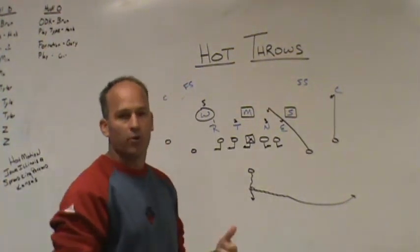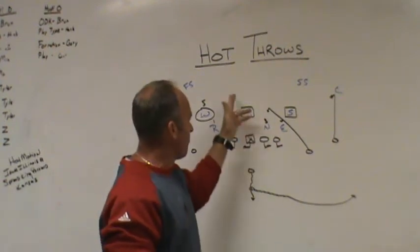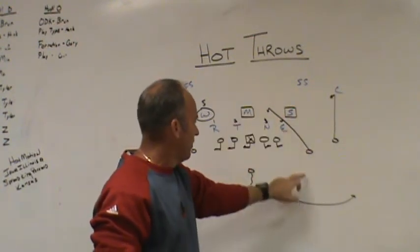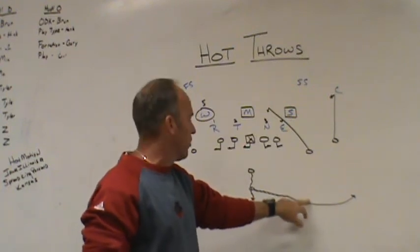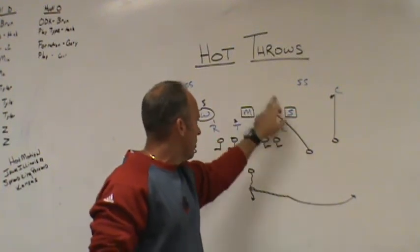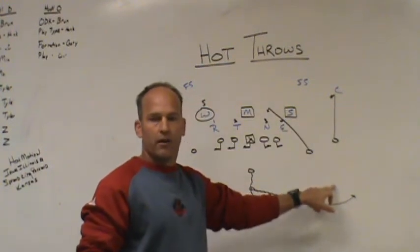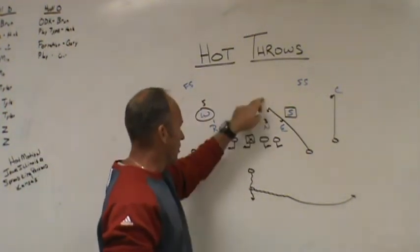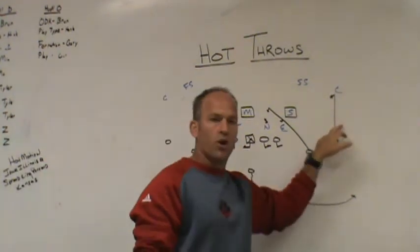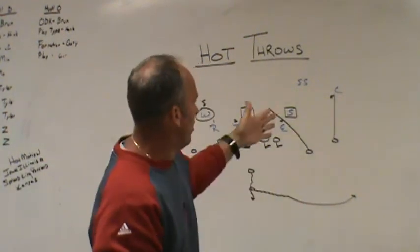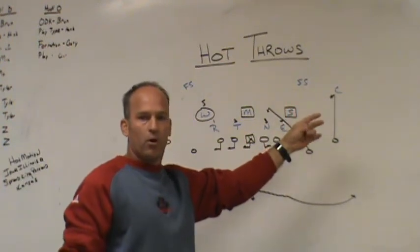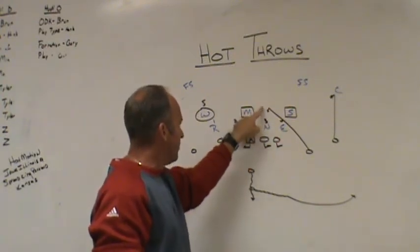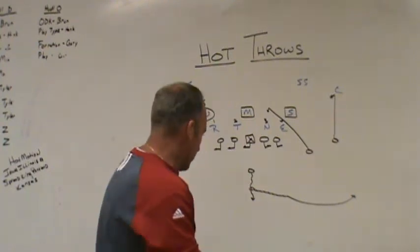The easiest way to discuss and teach this is: replace inside blitzes with inside routes, and replace edge blitzes with outside routes. Make sure the quarterback understands, number one, who his hot reads are, and number two, within the route concepts being thrown, where the football can go if he gets a blitz from an unaccounted player. Within your teaching progression, have routes built in that you can throw hot — in this case the check-down spot and the hot swing.